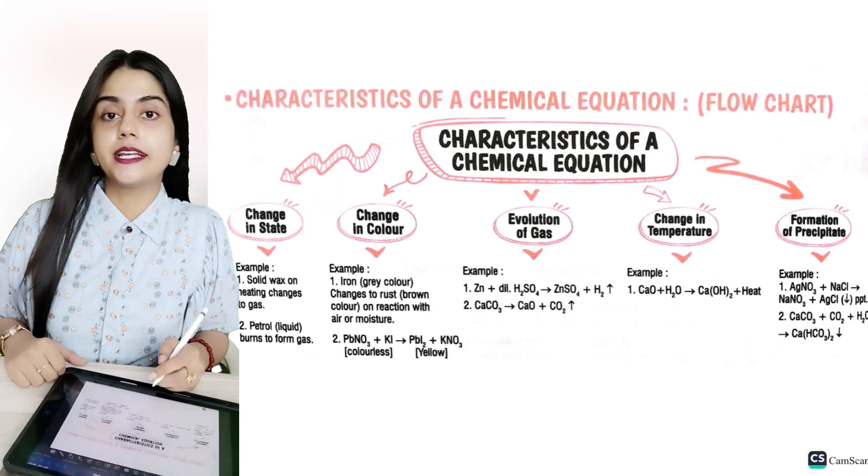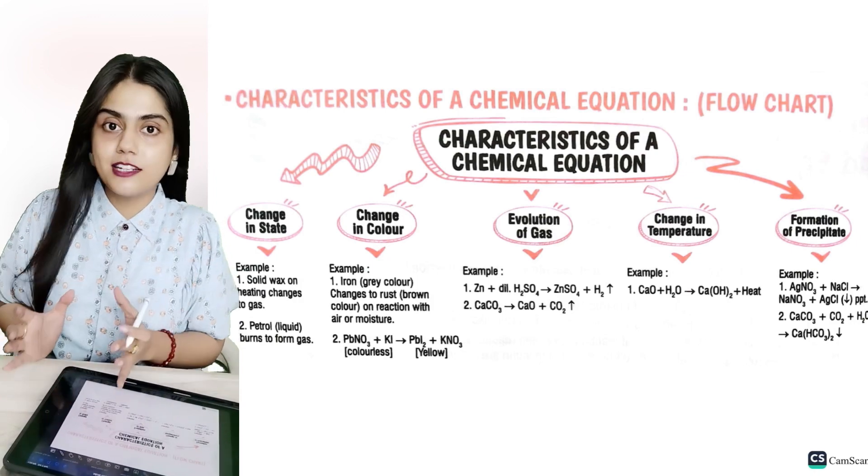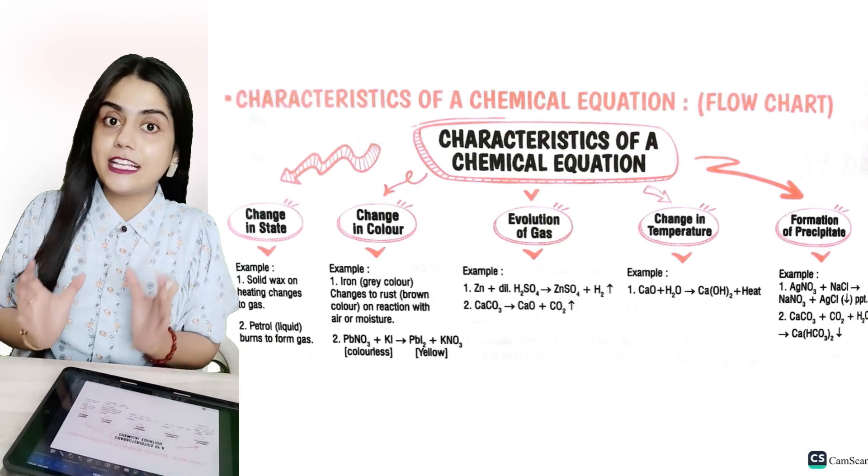Here we have 5 characteristics of chemical reaction. First of all, change in state. Chemical reaction changes our state. It means it will go in liquid, it will go in molten state, or it will go in gaseous state.